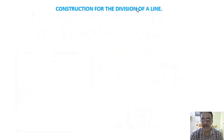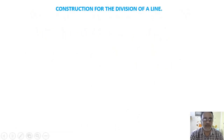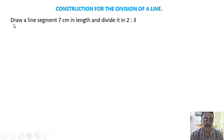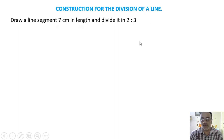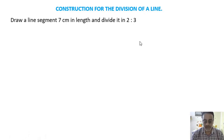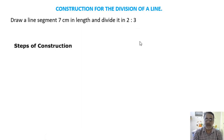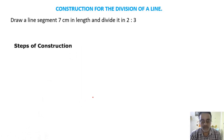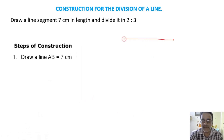Construction for the division of a line. We are going to take one example: draw a line segment 7 cm in length and divide it in the ratio 2 is to 3. So we will start the steps of construction. First we will draw a line. 7 cm.